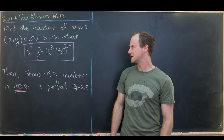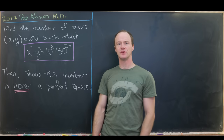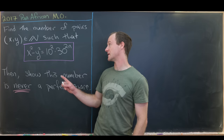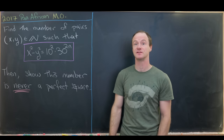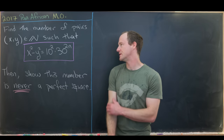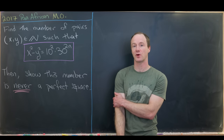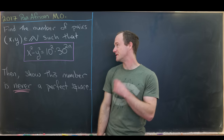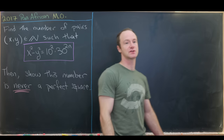The first thing to do is factor as much as possible. On the right-hand side, that means factoring into a product of primes. On the left-hand side, that means factoring as a difference of squares.